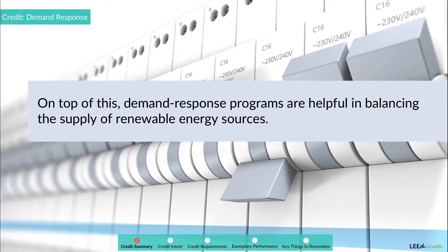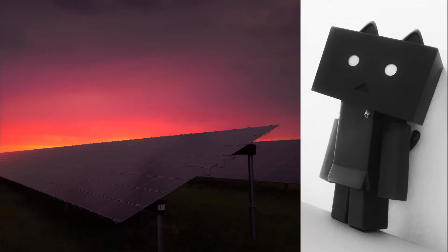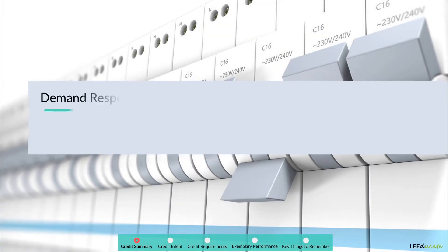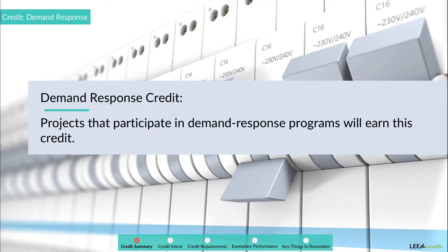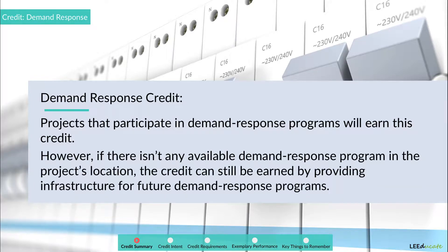For example, a solar energy source will not be able to generate power at night, which will lower the power availability. A demand response program can offset this effect. Projects that participate in demand response programs will earn this credit. However, if there isn't any available demand response program in the project's location, the credit can still be earned by providing infrastructure for future demand response programs.